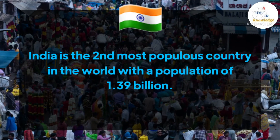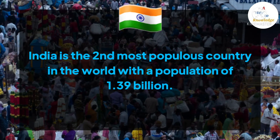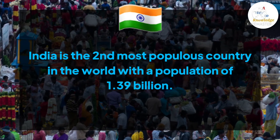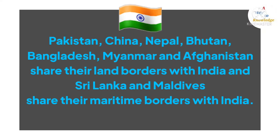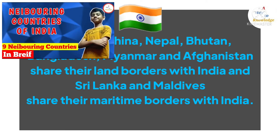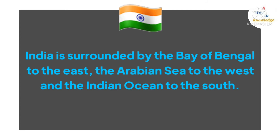India is the second most populous country in the world with a population of 1.39 billion. Its capital is New Delhi and its official language is Hindi. Pakistan, China, Nepal, Bhutan, Bangladesh, Myanmar and Afghanistan share their land borders with India, and Sri Lanka and Maldives share their maritime borders with India, as we have learned in the video of neighboring countries. India is surrounded by the Bay of Bengal to the east and the Arabian Sea to the west and the Indian Ocean to the south.